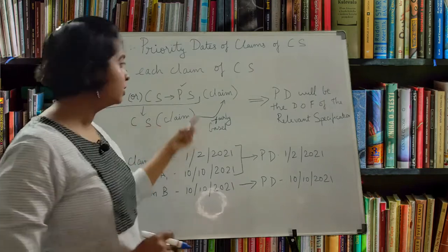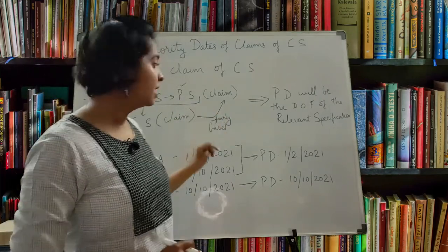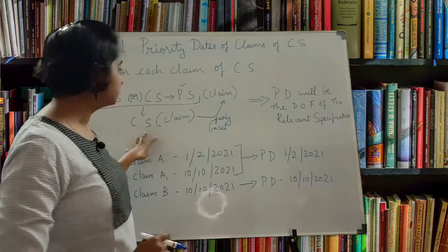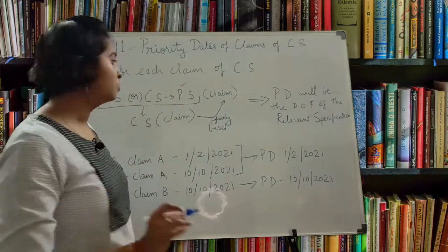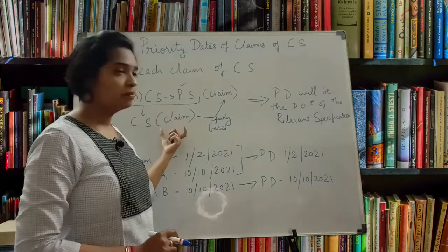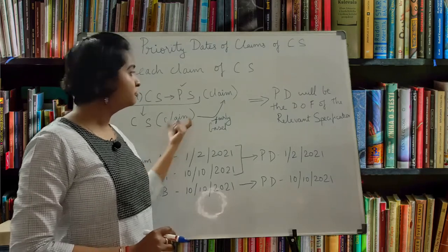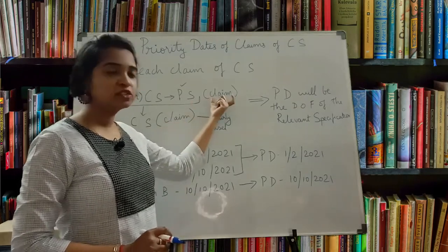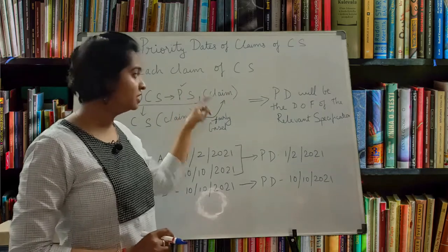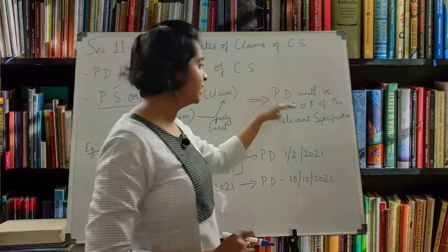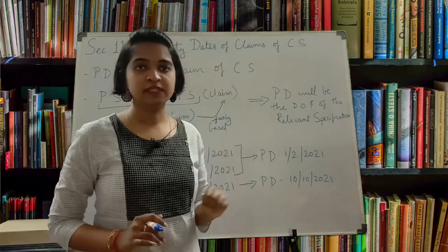In this scenario, even in the provisional specification you are mentioning a claim, and in the complete specification also you are having a claim. The key point is: if the claim mentioned in the complete specification is fairly based on the claim mentioned in the provisional specification, then the priority date will be the date of filing of the relevant provisional specification.